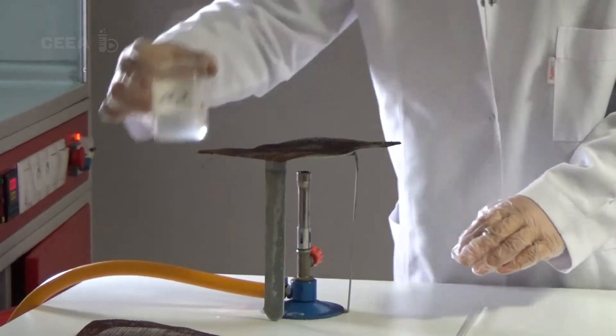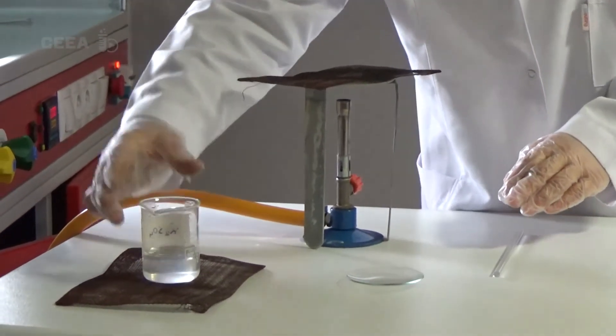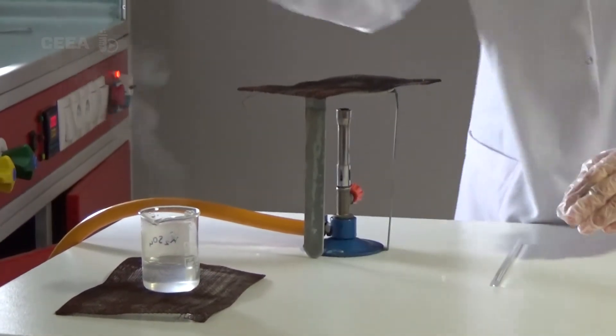Take the beaker off the burner when the desired volume is obtained. Leave it to cool down.